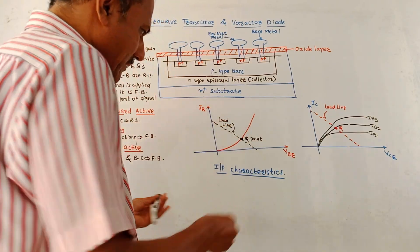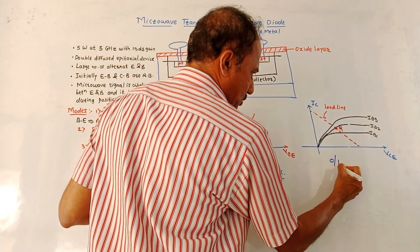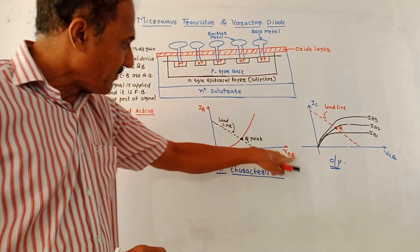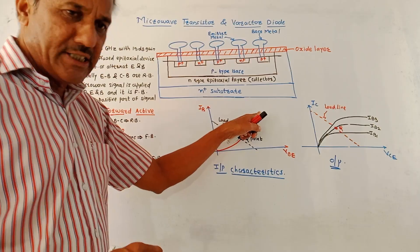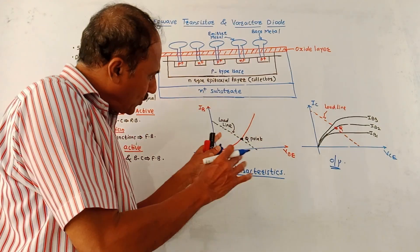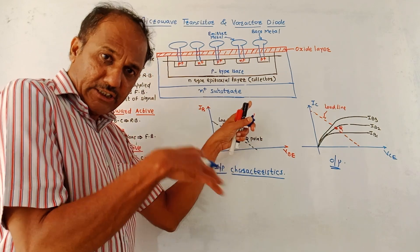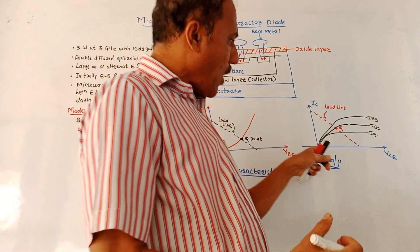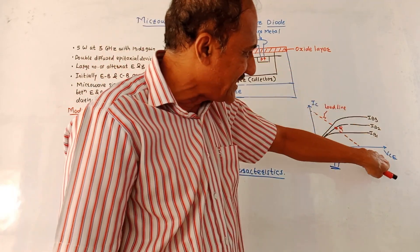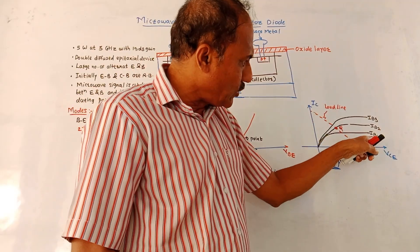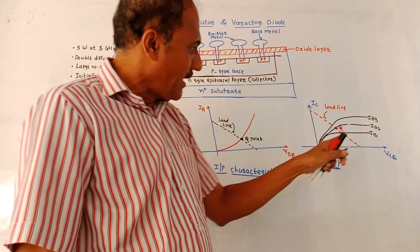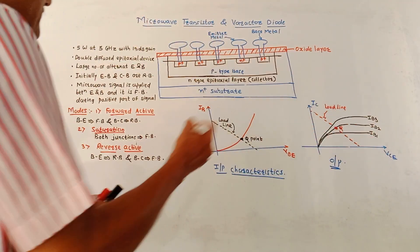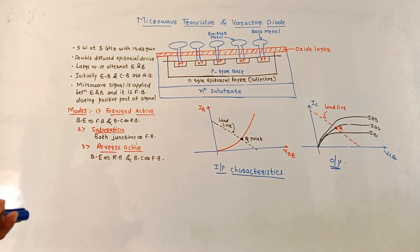These two diagrams, first diagram shows input characteristics, second diagram shows output characteristics. Input characteristics is a graph of base current versus VBE. As VBE increases the base current exponentially increases. I have drawn a load line; the point at which the load line intersects this input characteristics graph of IB versus VBE, this point is called Q point. Next is the graph of output characteristics. It is graph of IC collector current versus VCE. Three graphs are drawn for different values of IB: IB1, IB2 and IB3. After a particular value of VCE the collector current does not increase, it remains constant. So this is about the construction and working details of microwave transistor.